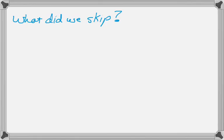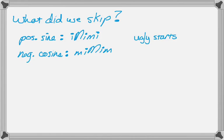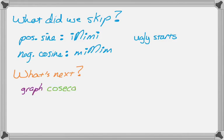That's about it. What did we skip? I only graphed two of the four cases. I skipped a positive sine graph — intercept, maximum, intercept, minimum, intercept — and a negative cosine graph — minimum, intercept, maximum, intercept, minimum. I also skipped an example with an ugly starting point, where it's not easy to get 0 on the axis. If that happens, skip placing the y-axis until the very end, otherwise you'll want to force a point there unnecessarily. Where do you go from here? You take what you learned and apply it to graphing cosecant and secant. Anyway, it's a long video, but I hope this was helpful. Good luck.